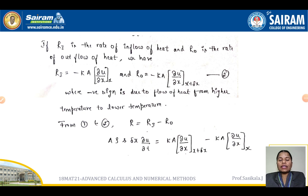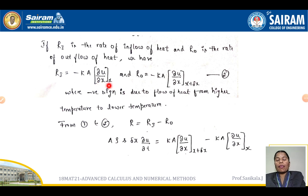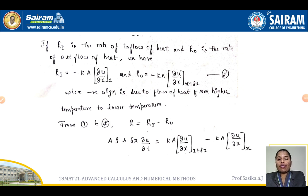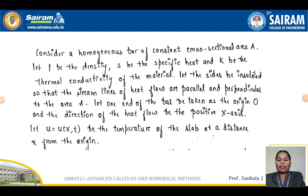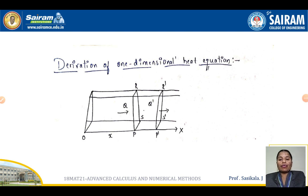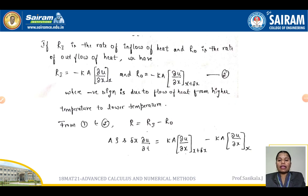Now consider Ri as the rate of inflow of heat and Ro as the rate of outflow. The rate of inflow is Ri = -KA · (∂u/∂x) at point x, and the outflow is Ro = -KA · (∂u/∂x) at x + delta x. This is equation 2. The negative sign is because heat flows from higher temperature to lower temperature.